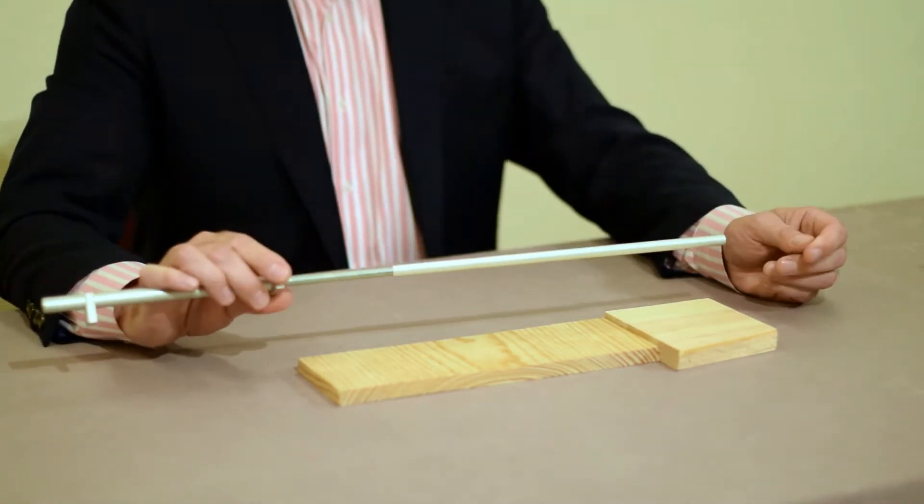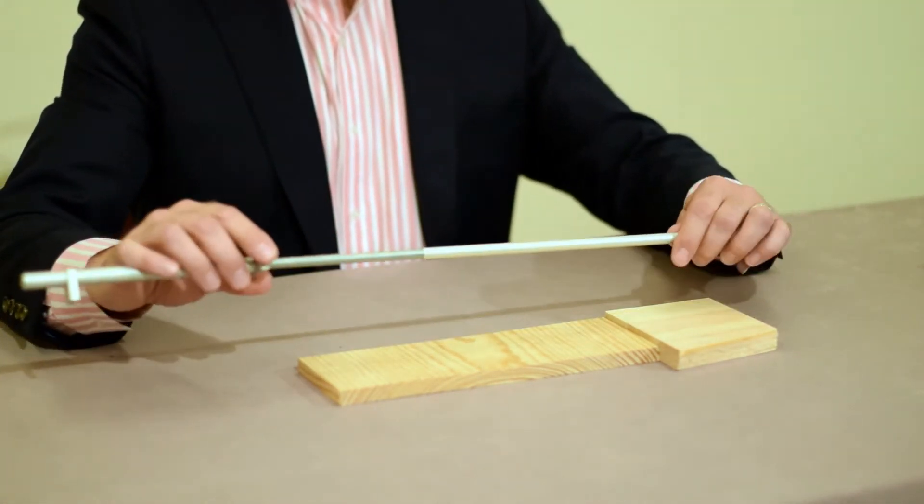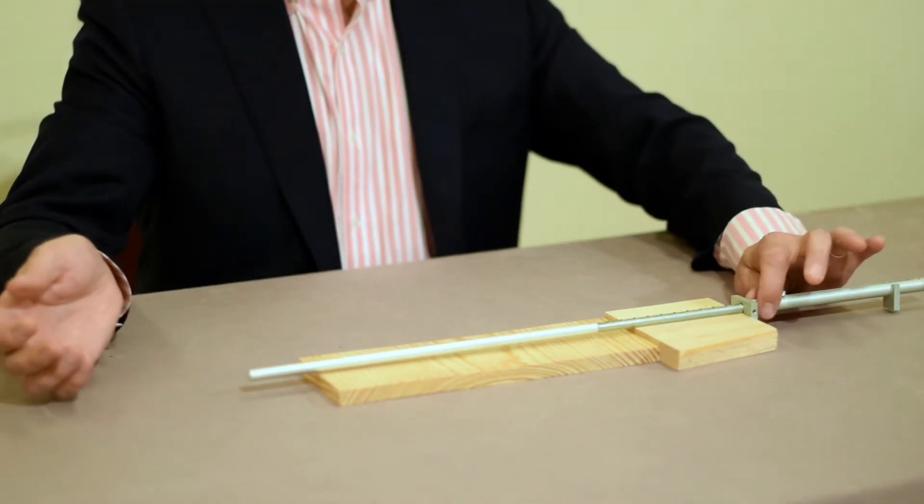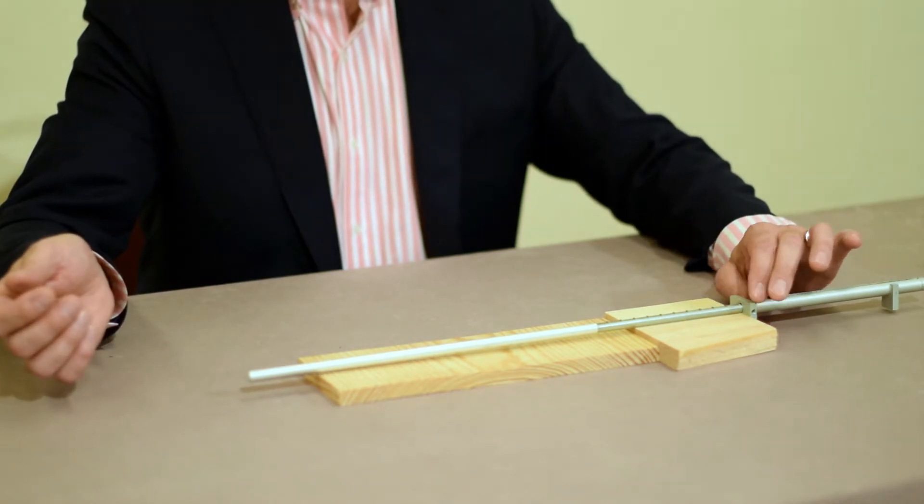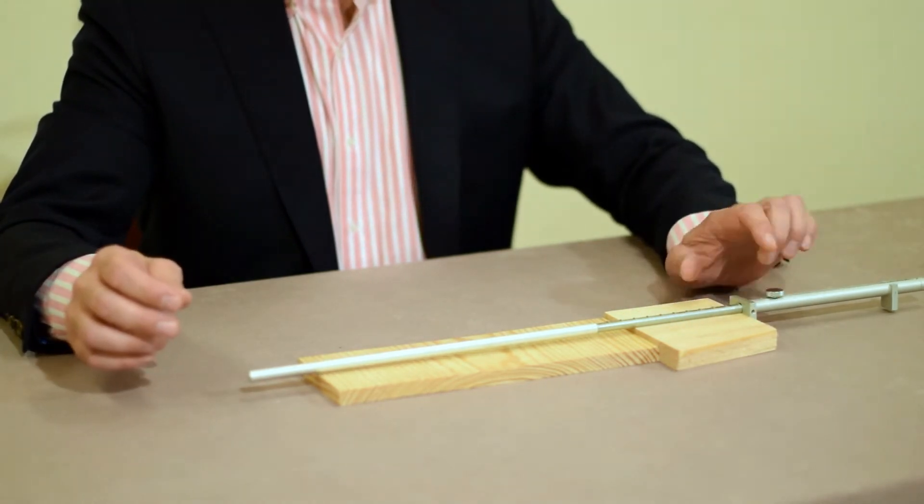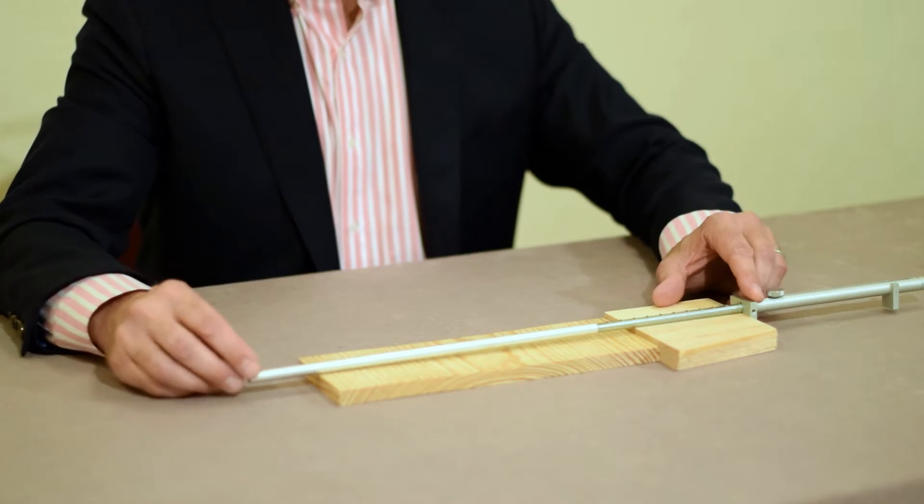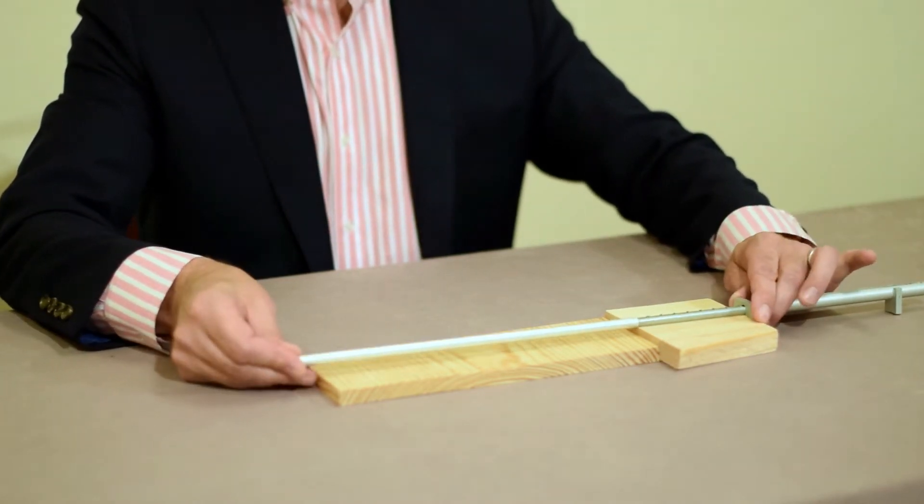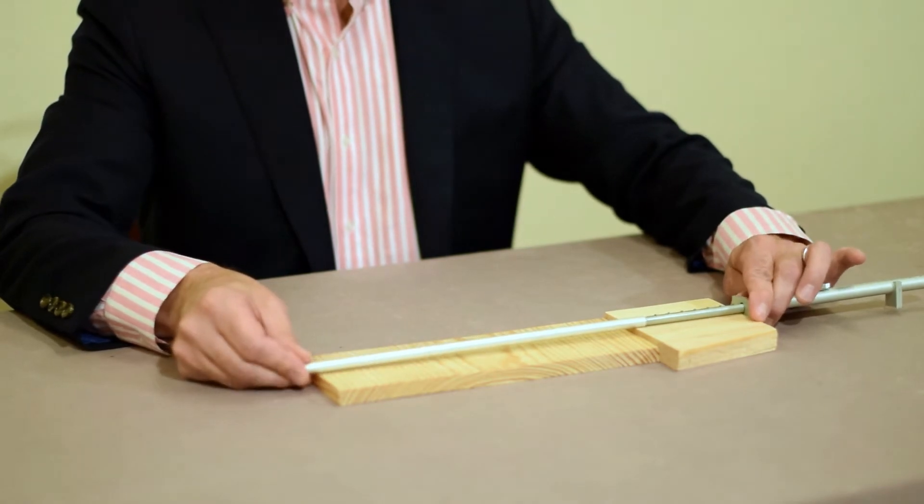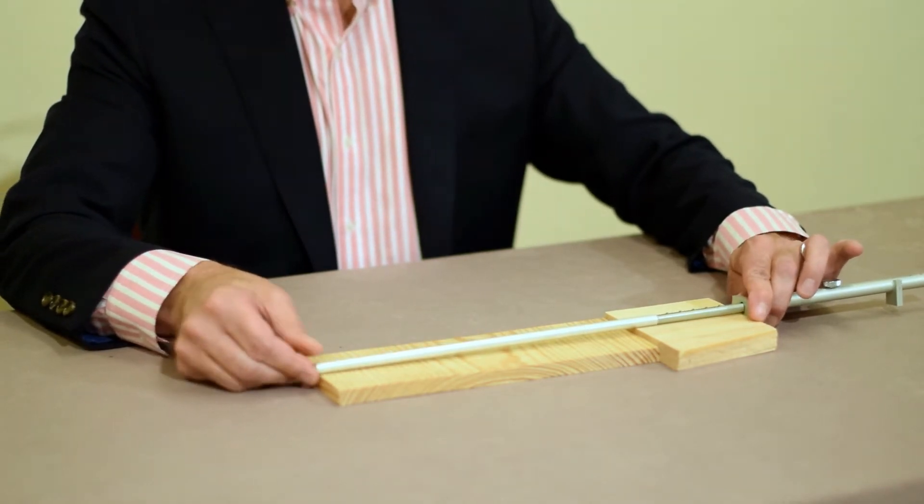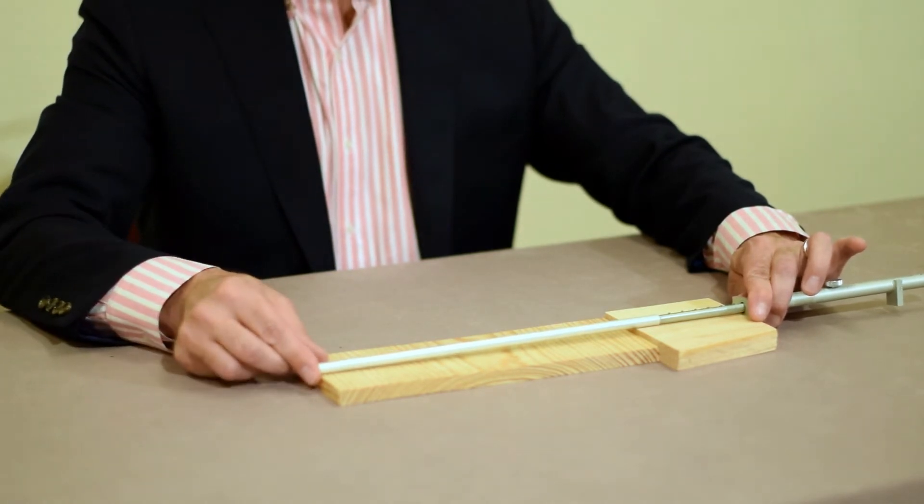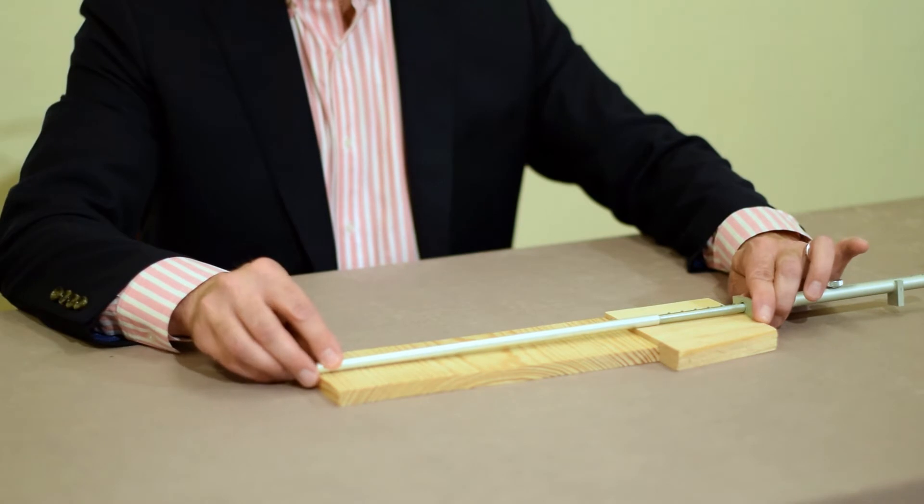I'm going to set this up. I'm going to turn it around just because I can. I'm going to set my fence against the side of the wood nice and flush. The fence has to be flush against the side and I'm going to slide that click rule in. I'm going to slide the information rod in until the extension, the end of the extension, is flush with the end of the wood.